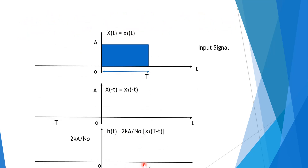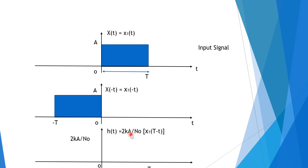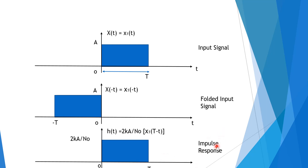With input signal x(T) = x₁(T) of amplitude A, we find x(−T) = x₁(−T). The impulse response is H(T) = 2kA/N0 times x₁(T − T). This folded input signal is our impulse response of the match filter.